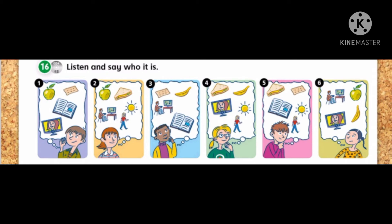Number 2. She wants an apple and a banana. She wants to play on her computer and watch TV. It's number 6.